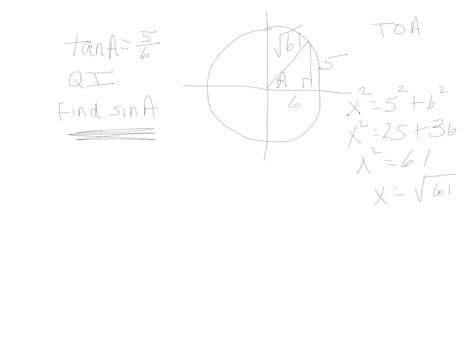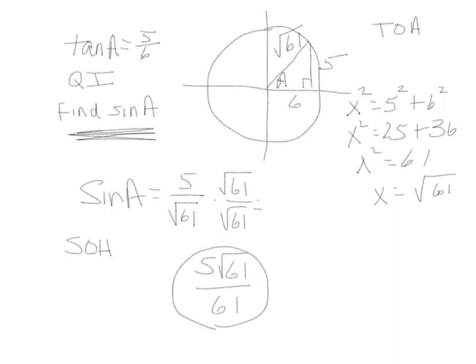Our question asks how big is sine of A. Sine is S-O-H from SOHCAHTOA, so we want the opposite side from A, which is 5, over the hypotenuse, which is the square root of 61. That would be our answer, however you cannot leave a radical in the bottom of a fraction. So we need to rationalize — multiply by that radical — which gives us 5√61 over 61. That is our answer.